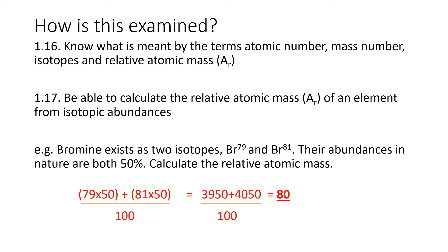For 1.17, you'll get questions like I've demonstrated below. Bromine exists as two isotopes, Br-79 and Br-81. Their abundances in nature are both 50%. Calculate the relative atomic mass. You'd use the steps I've outlined in this video: multiplying the mass of each one by its abundance, adding them together, and dividing by 100. This is quite a common question, and if you do it the way I've demonstrated here, you'll get full marks.